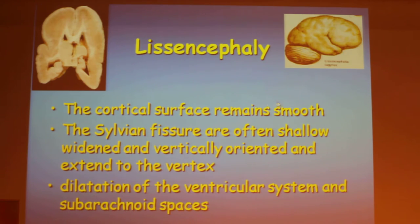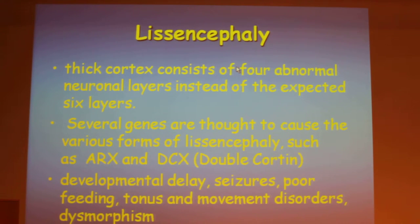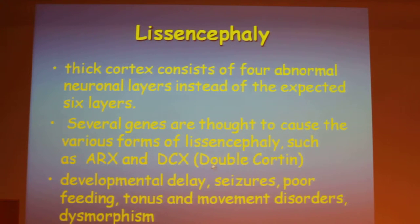Lissencephaly is a smooth brain. The sylvian fissures are often shallow and widened, vertically oriented, and extend to the vertex. There will be dilatation of the ventricular system. The cortex consists of four abnormal layers instead of the normal six layers. Several genes cause various forms of lissencephaly, such as ARX and DCX.